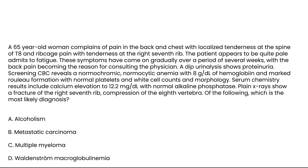Vignette one: A 65-year-old woman complains of pain in her back and chest with localized tenderness at the spine of T8 and ribcage pain with tenderness at the seventh rib. The patient appears pale and admits to fatigue. A dipstick UA shows proteinuria. CBC shows anemia with hemoglobin of 8, marked Rouleau formation, normal platelets and white cells. Serum chemistry shows calcium elevation and normal ALP. X-rays show a fracture of the right seventh rib and compression of the eighth vertebra. What is the most likely diagnosis?